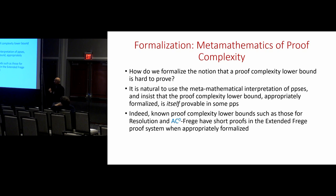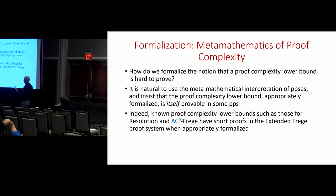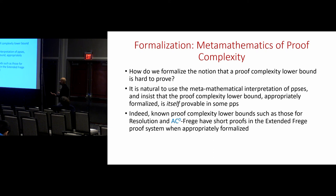The main thing I'd like to focus on is the formalization of what it means for proof complexity lower bounds to be hard to prove. It's natural to use the metamathematical interpretation: when we say a theorem is easy to prove, we mean there's some standard proof system that can prove it efficiently. If you formalize proof complexity lower bounds appropriately as propositional formulas, you can prove them in some propositional proof system. Indeed, known lower bounds such as those for resolution and constant-depth Frege have short proofs in extended Frege when formalized appropriately.